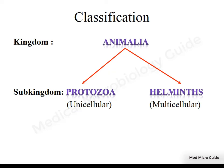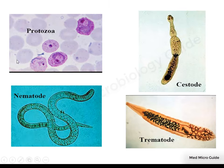Protozoans are unicellular parasites, whereas helminths are multicellular parasites. This picture shows unicellular protozoa and multicellular helminths. Helminths are further classified into cestodes, nematodes, and trematodes. Cestodes are dorso-ventrally flattened, tape-like worms. Trematodes are dorso-ventrally flattened, leaf-like worms. Nematodes are thread-like worms.